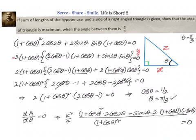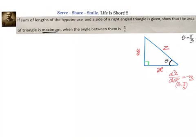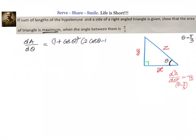We obtained θ = π/3 by setting dA/dθ = 0, but this alone does not prove that area is maximum — it only shows the area is at an extremum. To prove maximum, we must compute d²A/dθ² at θ = π/3 and show it is negative. We take k²/4 out as a constant.